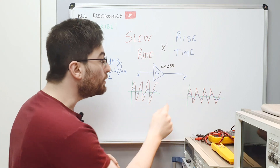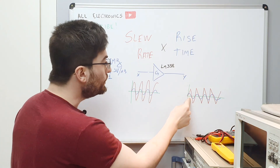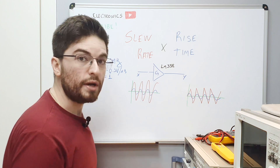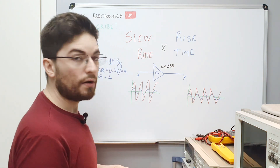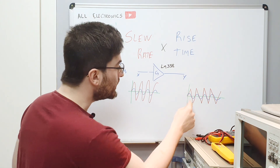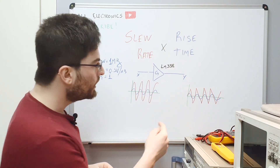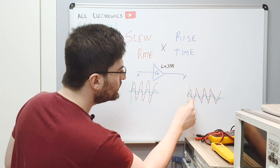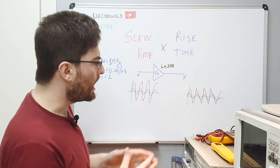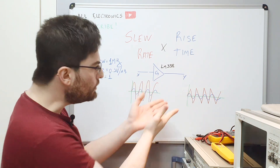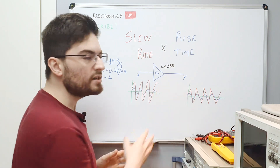Now the signal will be distorted, because at the output we will not have a sinusoidal signal anymore. Now we have harmonic distortion, because we are inputting a sinusoidal and at the output we do not have a sinusoidal signal—we have a triangular, slew rate limited signal. Now we have THD.